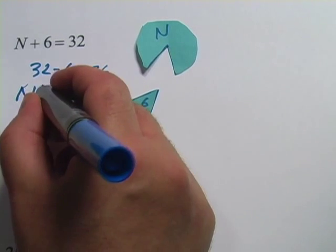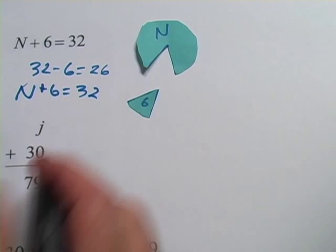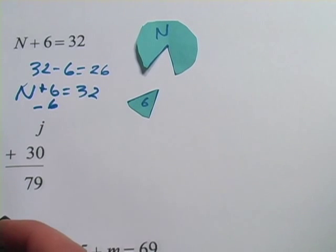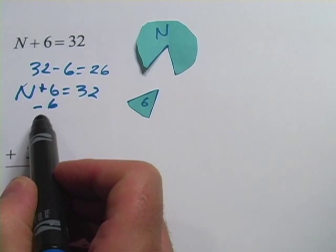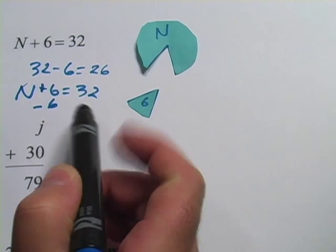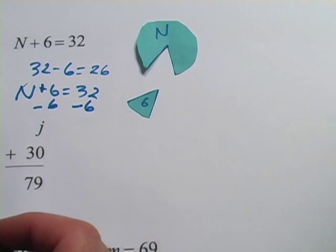I'll write it again down here, N + 6 = 32. And now I would do minus 6 to that side of the equation. But the rule in algebra is whatever you do to one side of the equal sign, you have to do to the other side. So I have to put minus 6 over there.